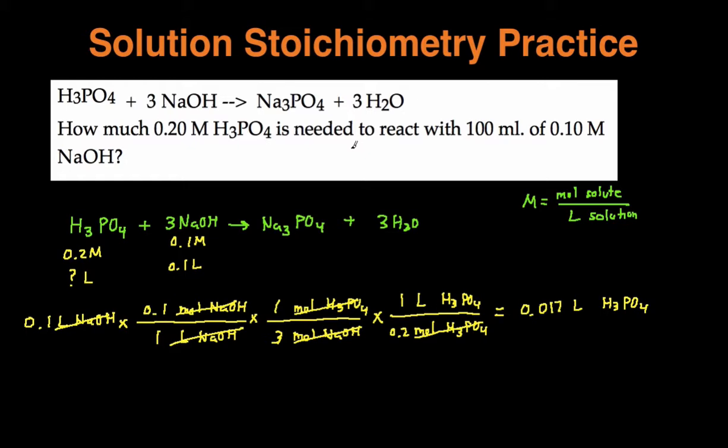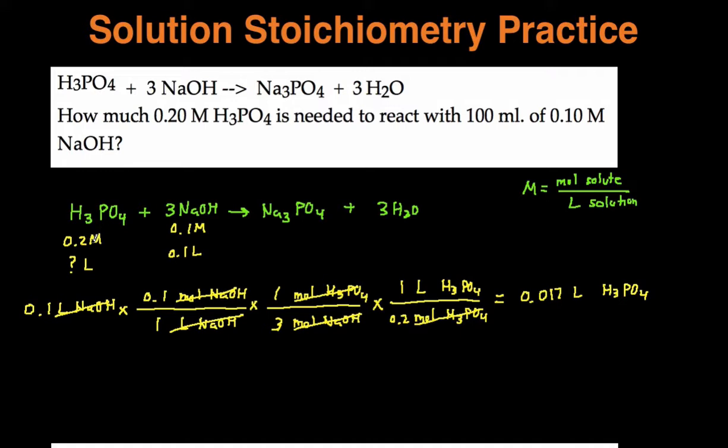So that's the long way, technically the correct way, doing it with stoichiometry. Now, this is the shortcut. So whenever you have a situation where you have molarity and volume, molarity and volume, and you have 1 and 2, you can set this up.